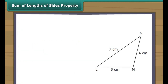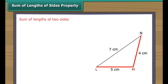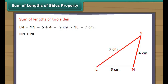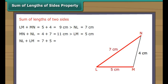In triangle LMN, LM is 5 cm, MN is 4 cm, and NL is 7 cm. LM plus MN equals 5 plus 4 equals 9 cm, which is greater than NL (7 cm). MN plus NL equals 4 plus 7 equals 11 cm, which is greater than LM (5 cm). NL plus LM equals 7 plus 5 equals 12 cm, which is greater than MN (4 cm).